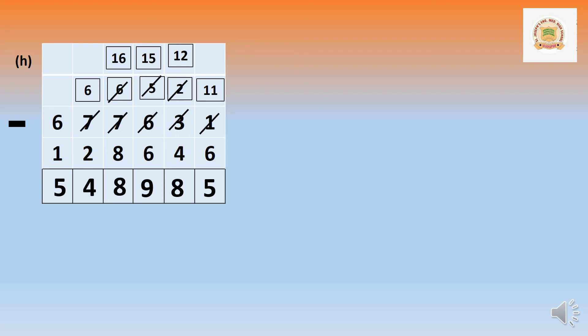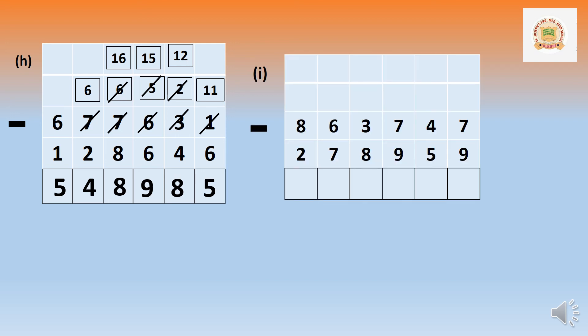This is the method for the last question of question number one of exercise 5.3. Question i: 8,63,747 minus 2,78,959.